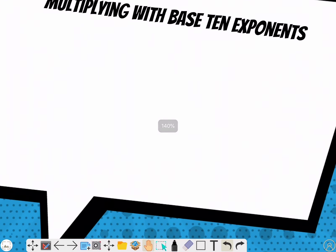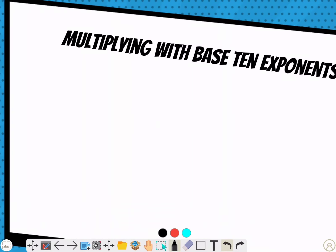When multiplying with base ten exponents, it ends up being like a two-step process. Here's a perfect example.